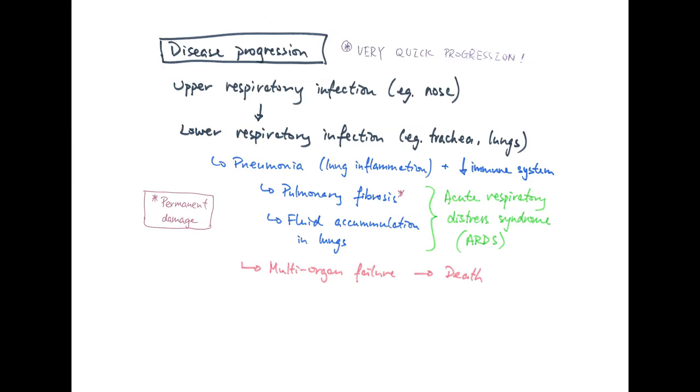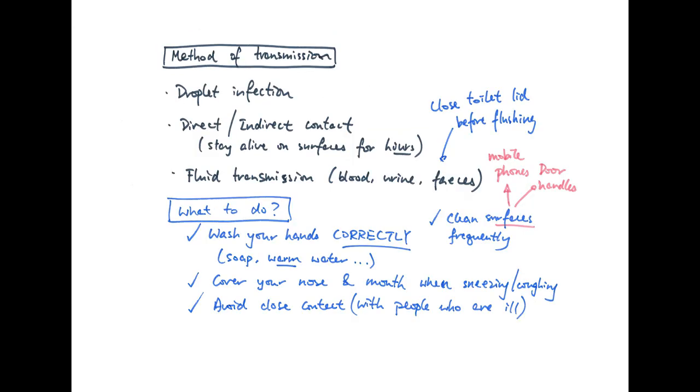So what can we do? There is still some speculation as to how the virus spreads, but mainly these are some confirmed ones. By knowing how the virus is transmitted, it will help us understand why NHS is pushing for these procedures. So these are the few key ones. Droplet infection, so sneezing and coughing, direct and indirect contact, as the virus can stay alive on even dead surfaces for hours, and fluid transmission, so things like blood, urine, and feces.